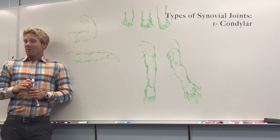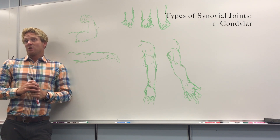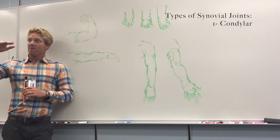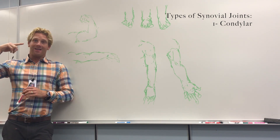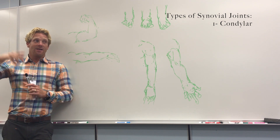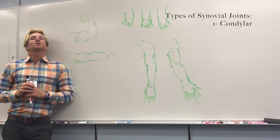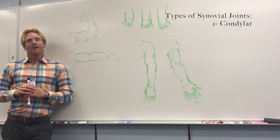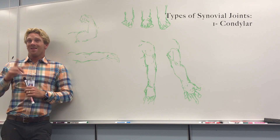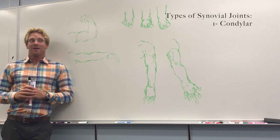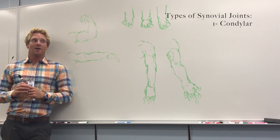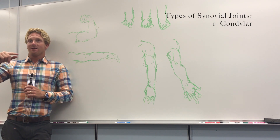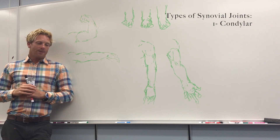Another example of the condylar joint is the joint between the most superior vertebra, the atlas, and the skull. This allows you to nod your head back and forth like this, but that joint is not responsible for the spinning. That's actually the joint between your first and second vertebrae, your atlas and your axis.